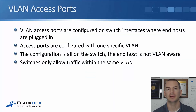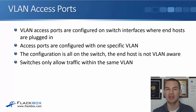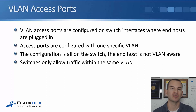In this lecture you'll learn about VLAN access ports and how to configure them. Access ports are configured on switch interfaces where end hosts are plugged in, and access ports are configured with one specific VLAN. For example, an engineering PC plugged into a switch port is configured as an access port in the engineering VLAN. The configuration is all on the switch — the end host is not VLAN-aware and doesn't even know that the VLAN exists.